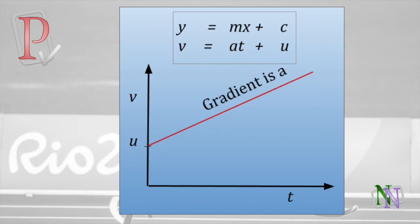This is the graph of V against T for a uniformly accelerated motion. The intercept on the vertical axis is at U, the initial velocity, and the gradient of the VT graph is A, acceleration, as we know. Using the general formula for a straight line, Y equals MX plus C, we can see that the equation of this graph is V equals U plus AT.